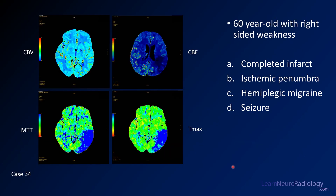Case 34 is a 60-year-old with right-sided weakness. You have perfusion color maps from a CT perfusion study. They're labeled: CBV up here, CBF or blood flow, MTT or mean transit time, and Tmax. There's an abnormality here. The question is: what is causing it? Is it a completed infarct, ischemic penumbra, hemiplegic migraine, or a seizure?